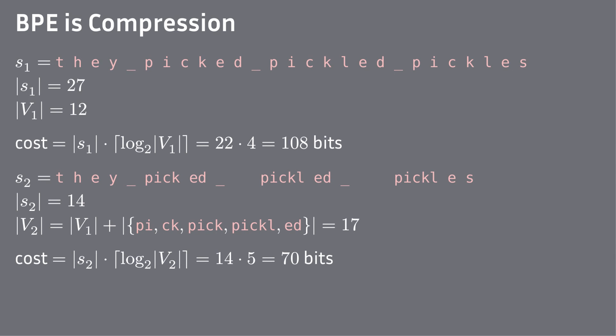This way, BPE saved us 38 bits. And by the way, if we ever zipped a file, it likely used LZW compression, which is very similar to how BPE works.